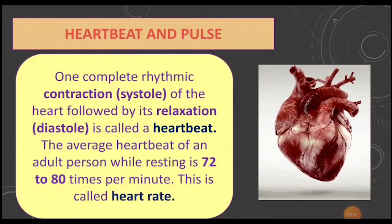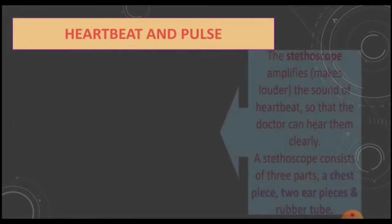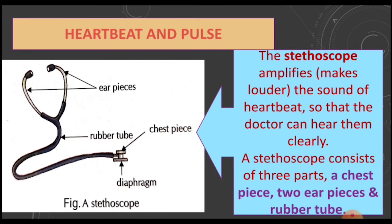If we place our hand on the left side of our chest we can feel our heartbeat. The doctor feels our heartbeat with the help of an instrument called a stethoscope. The stethoscope amplifies the sound of heartbeat so the doctor can hear it clearly. A stethoscope consists of three parts: a chest piece with a sensitive diaphragm at the bottom, two ear pieces, and a rubber tube joining the chest piece to the ear pieces. The stethoscope helps the doctor find out if our heart is functioning normally or not.